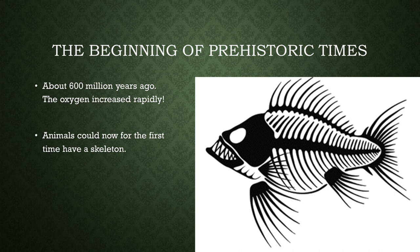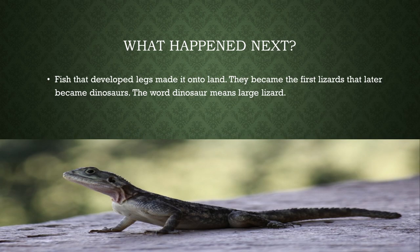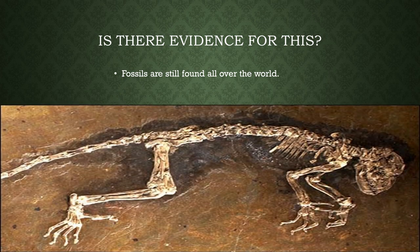About 600 million years ago, we have the beginning of prehistoric times. During this time, the oxygen level on Earth increased rapidly. Animals could now, for the first time, have a skeleton. Fish then developed legs and made it onto land. They became the first lizards that later would become dinosaurs — the word dinosaur basically means large lizard. Fossils from these animals are still found all over the world today.